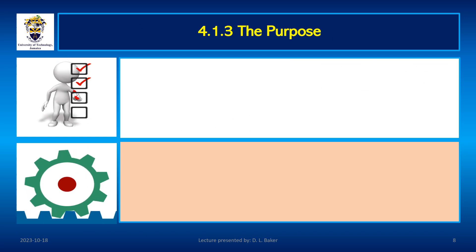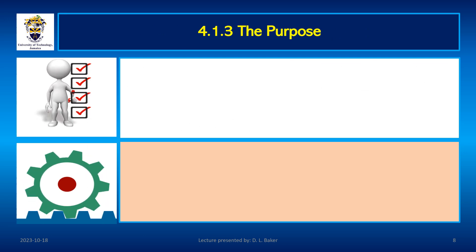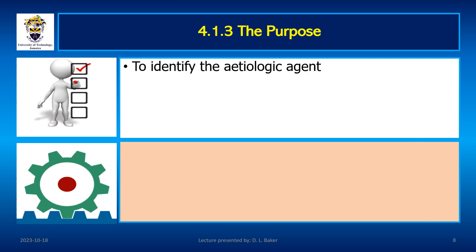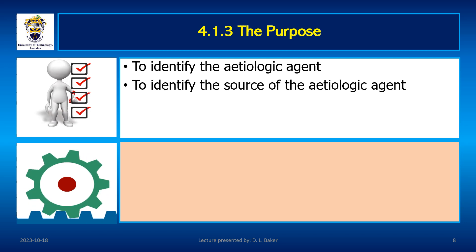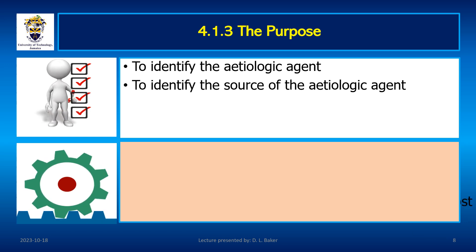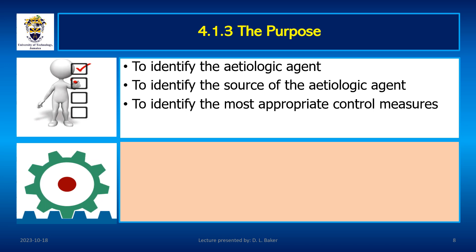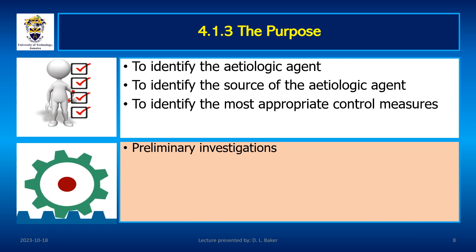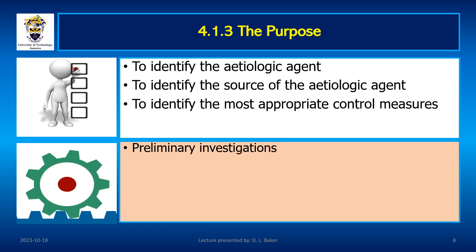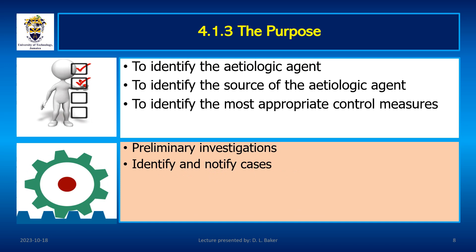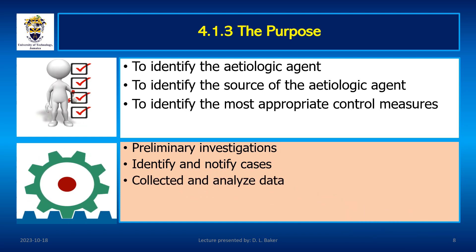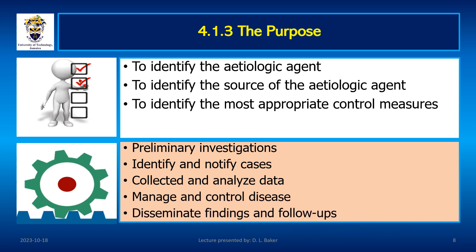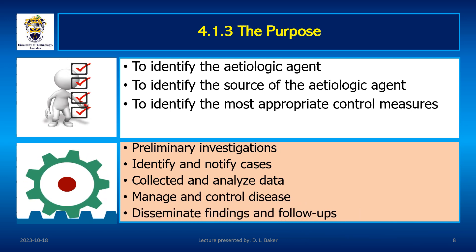The purpose for which we investigate an epidemic is to identify the etiologic agent, identify the source of the etiologic agent, and identify the most appropriate control measure. How is this done? You first start a preliminary investigation, identify and notify cases, collect and analyze data, manage and control the disease, and disseminate the findings and follow-ups.